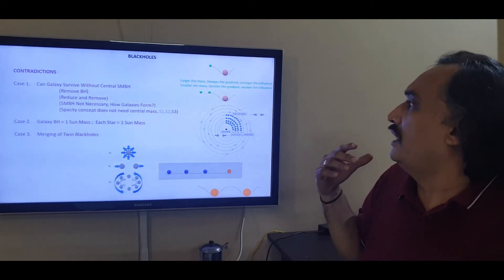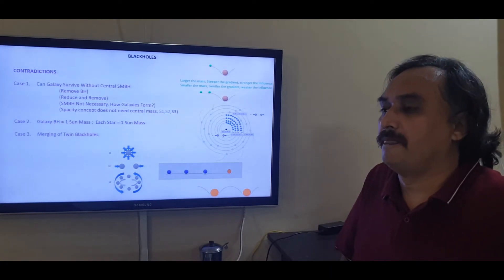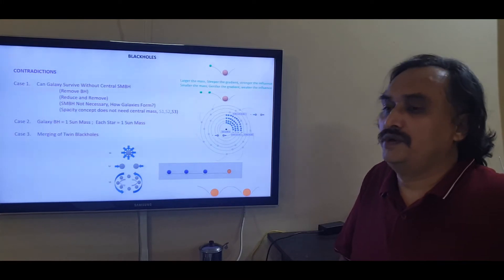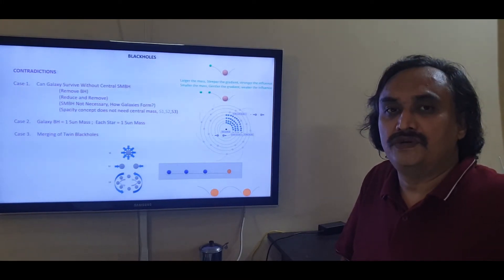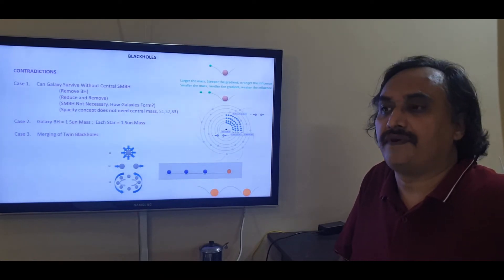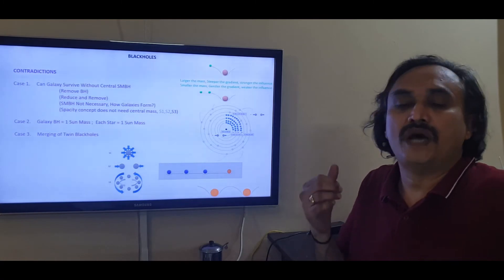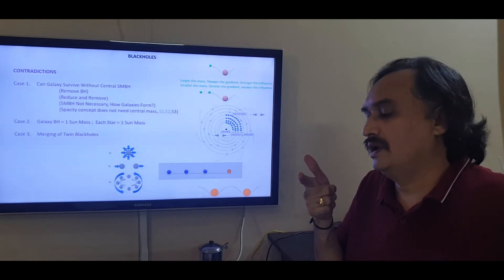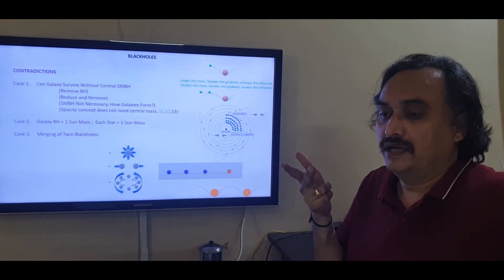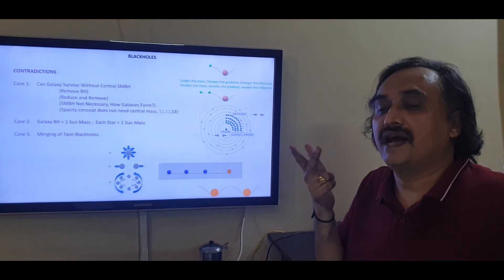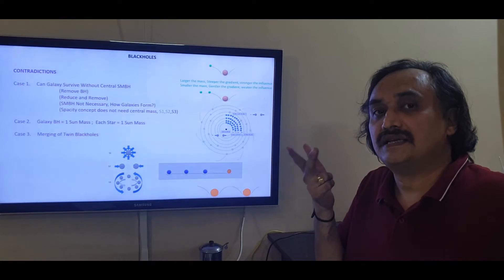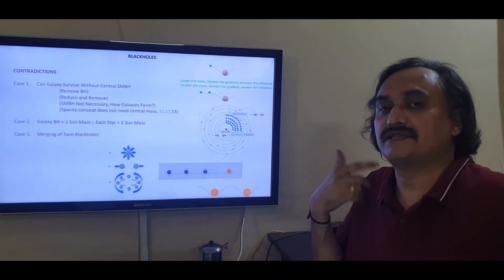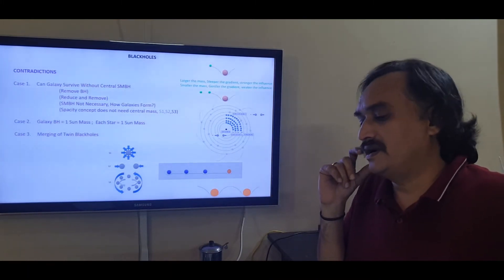Now one may say, if at all the galaxy can survive without the supermassive black hole, how did the galaxy form in the first place? You could visit my previous videos related to early universe, how the galaxies were formed. We explained how galaxies can form without the use of gravity, without the use of a supermassive black hole at the center, without the use of dark matter. We just used the highly ionized charged particles that the gas would be in the early universe.